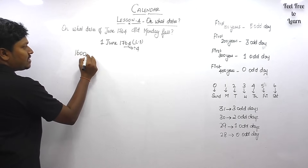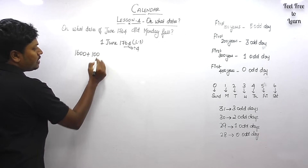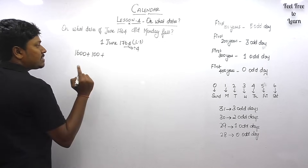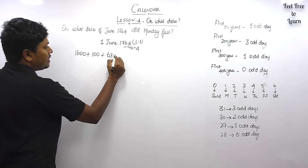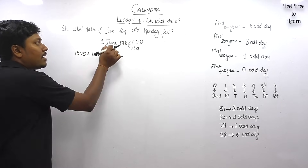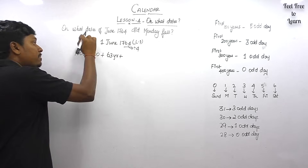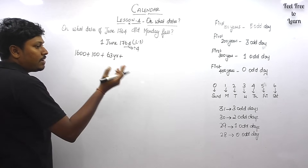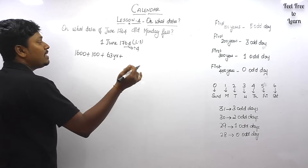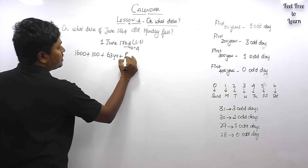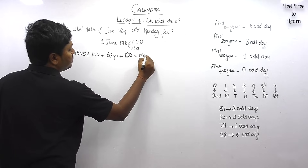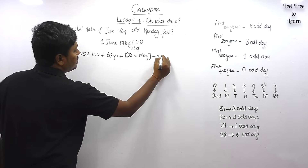Write 1764 as 1600 plus 100 equals 1700, with remaining 64 years — written as 63 years plus the 64th year. Our target is 1st June. Before June we have January, February, March, April, and May — five months total.